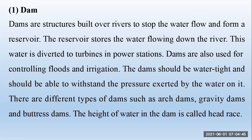First we should explain about the dams. Dams are structures built over rivers to stop the water flow and form a reservoir. The reservoir stores the water flowing down the river. This water is diverted to turbines in the power station. Dams are also used for controlling floods and irrigation.